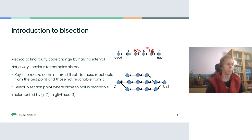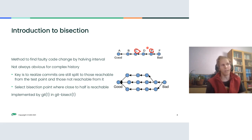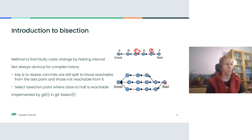This is how bisection works for simple linear history. But it's not always so easy, as you can see in the graph below, because git commit history can be an arbitrary directed acyclic graph due to branching and subsequent merges. So it's not always obvious which commit is halfway between the good and bad. If we have a good situation and a bad situation, it's not always obvious what is actually in the middle, and there is not necessarily such a commit exactly in the middle.